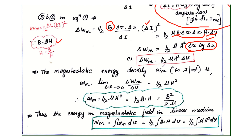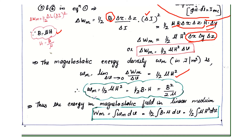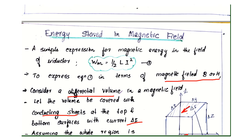The magnetostatic energy density is defined as wm = limit as δv → 0 of δWm / δv, which gives wm = ½μH². Substituting B = μH, this also equals B·H/2 or B² / 2μ. Therefore, the total energy in the magnetostatic field in a linear medium is Wm = ½ ∫ B · H dv = ½ ∫ μH² dv. That is the expression for energy stored in the magnetic field.